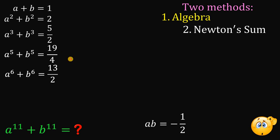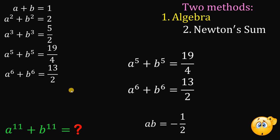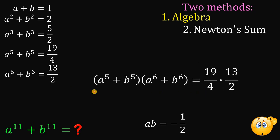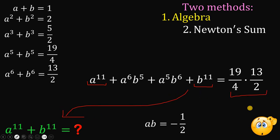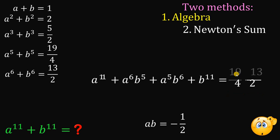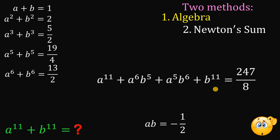We're almost done because if we multiply a raised to the 5th power and a raised to the 6th power, we get a raised to the 11th power. So let's multiply the two equations. Multiplying a raised to the 5th plus b raised to the 5th by a raised to the 6th plus b raised to the 6th gives a raised to 11 plus a to the 6th times b to the 5th plus a to the 5th times b to the 6th plus b raised to 11. The right-hand side: 19 over 4 times 13 over 2 gives us 247 over 8.